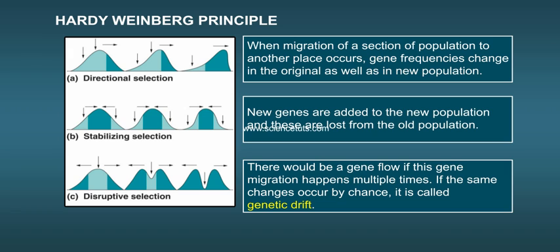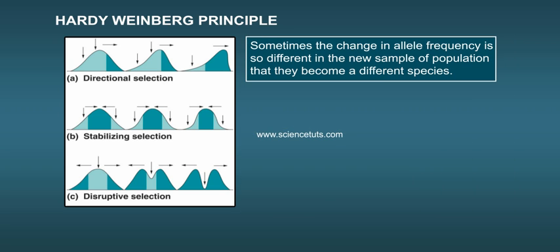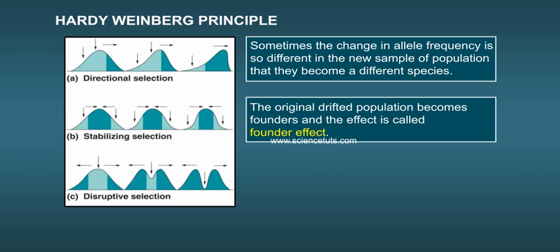There would be a gene flow if this gene migration happens multiple times. If the same changes occur by chance, it is called genetic drift. Sometimes the change in allele frequency is so different in the new sample of population that they become a different species. The original drift population becomes founders and the effect is called founder effect.